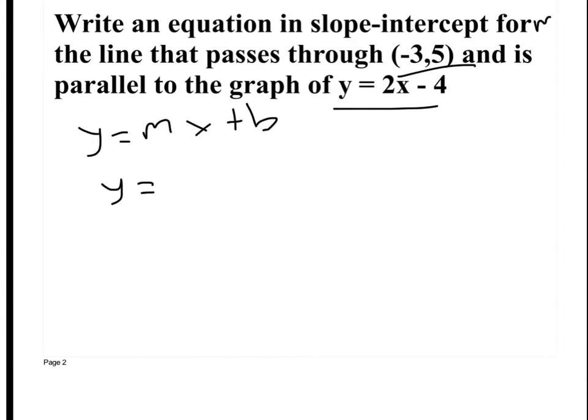If it's parallel, and the original line is y equals 2x minus 4, what's the slope of the original line? 2. So what would be the slope of the new line? 2 — the exact same slope. And I need to find my y-intercept because it's got to be in slope-intercept form. So I plug in my x and y-coordinate: 5 goes to y, negative 3 goes for x, and I solve for b.